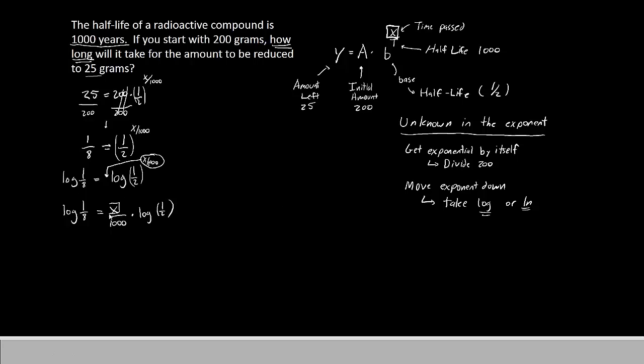Our goal is still to try to get the x by itself. The first thing I would do is probably multiply by 1,000 on both sides. So we will put times 1,000 and times 1,000 on both sides. The 1,000s cancel and we will have 1,000 log 1 eighth equals x times log 1 half.